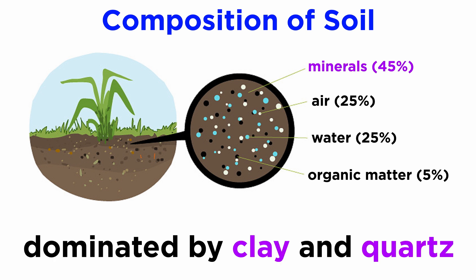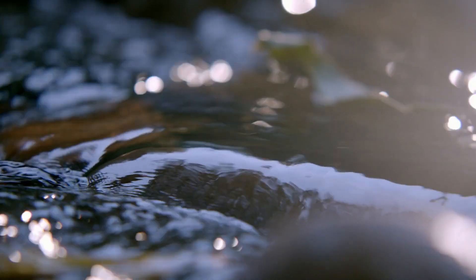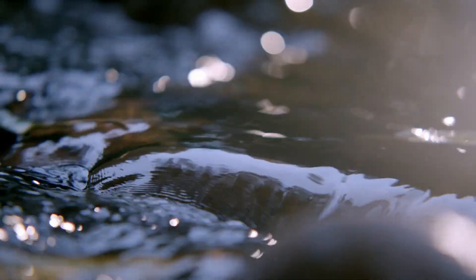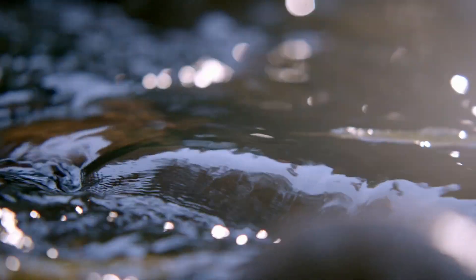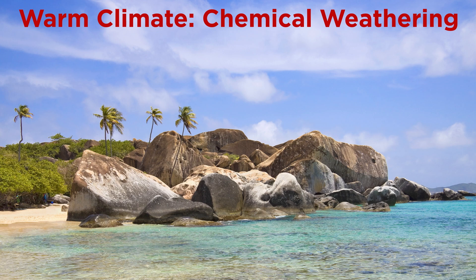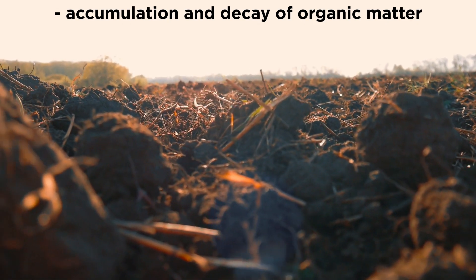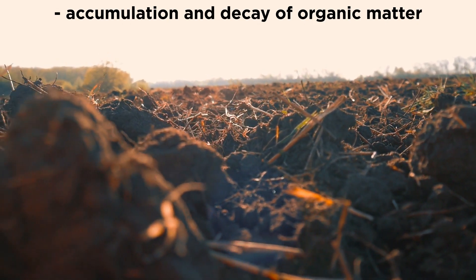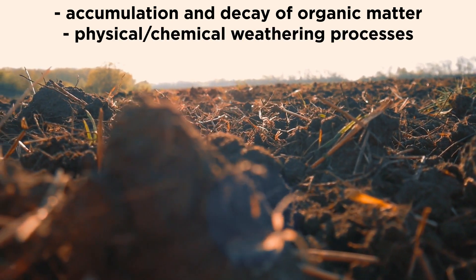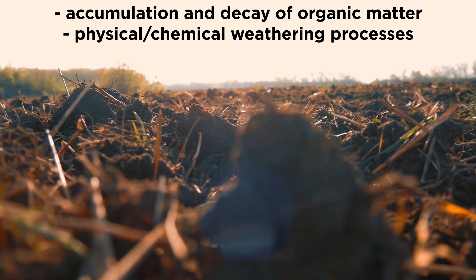While the mineral content of soil is variable, it is typically dominated by clay and quartz. The types of weathering that take place within a region have a major influence on soil composition and texture. For example, in a warm climate where chemical weathering dominates, soils tend to be richer in clays. In a nutshell, soil forms through accumulation and decay of organic matter, and through physical and chemical weathering processes.